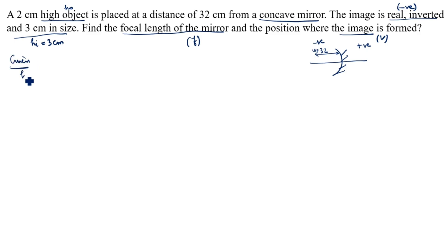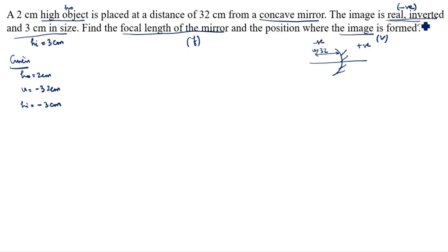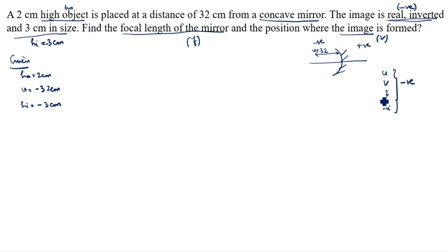Given data: HO is equal to 2 centimeter, U is equal to minus 32 centimeter, HI is equal to minus 3 centimeter. Why minus? Because real and inverted is minus. In a concave mirror, U, V, F are always negative, and HI is also negative.